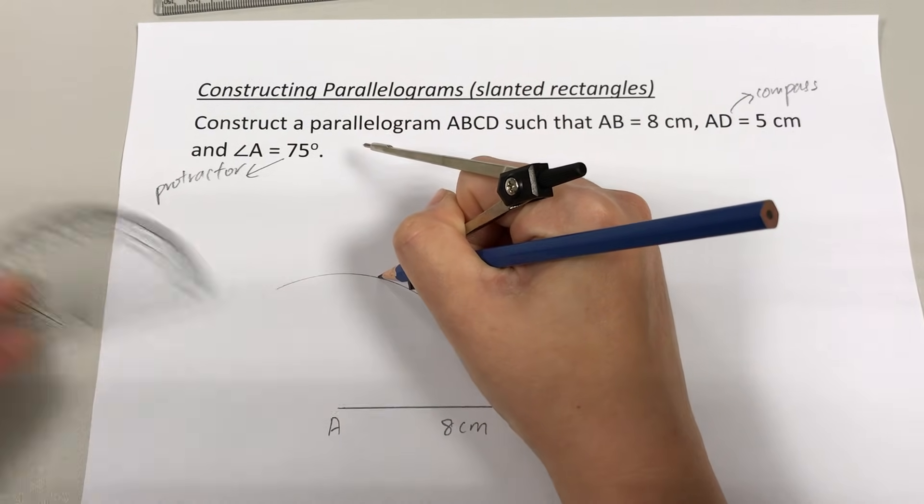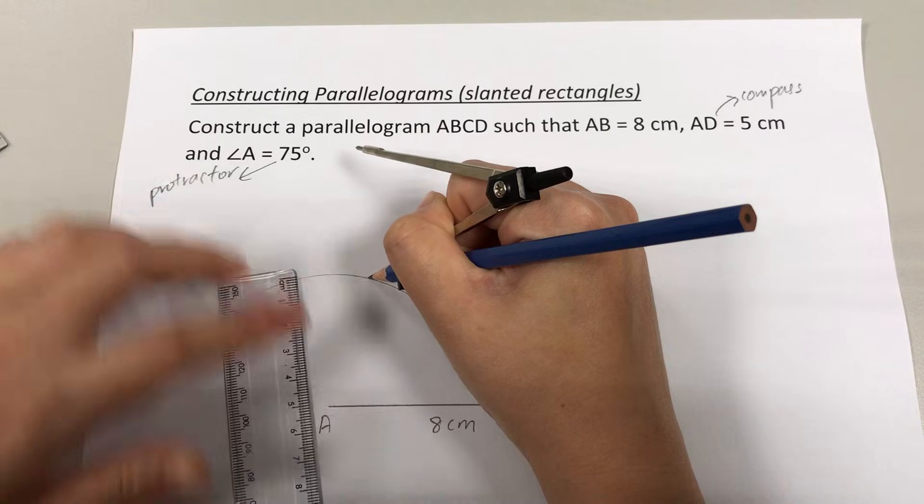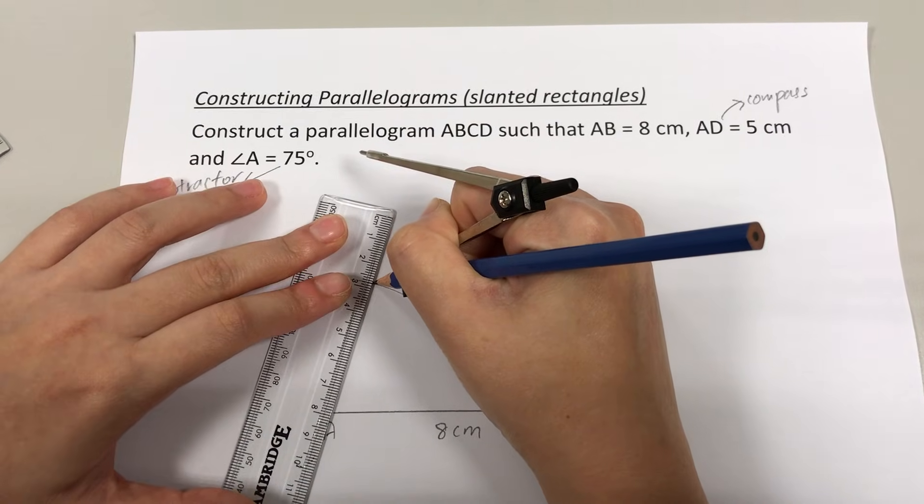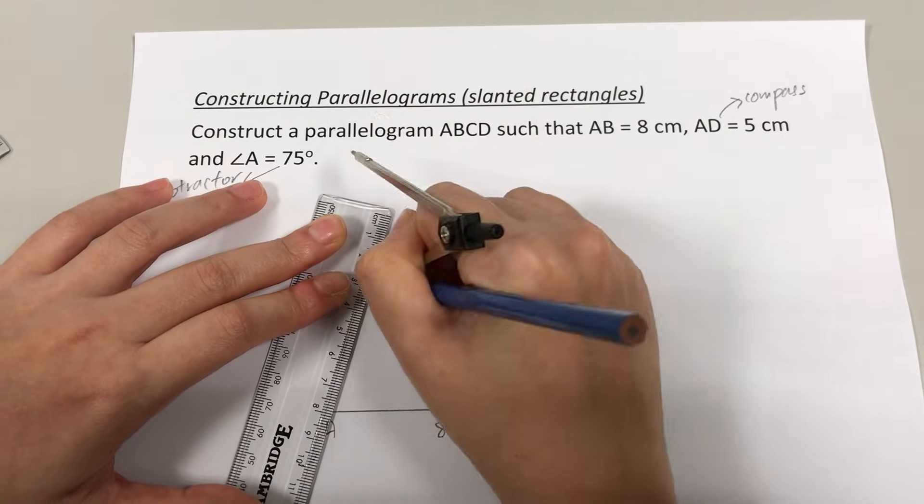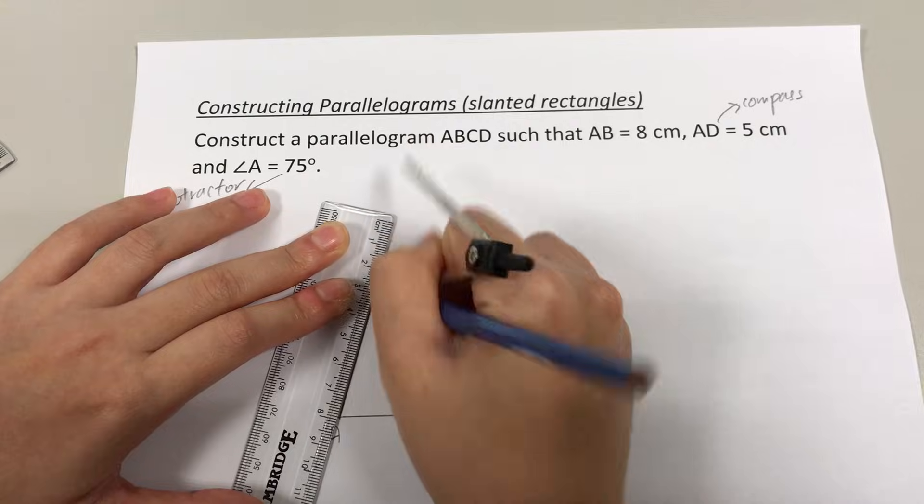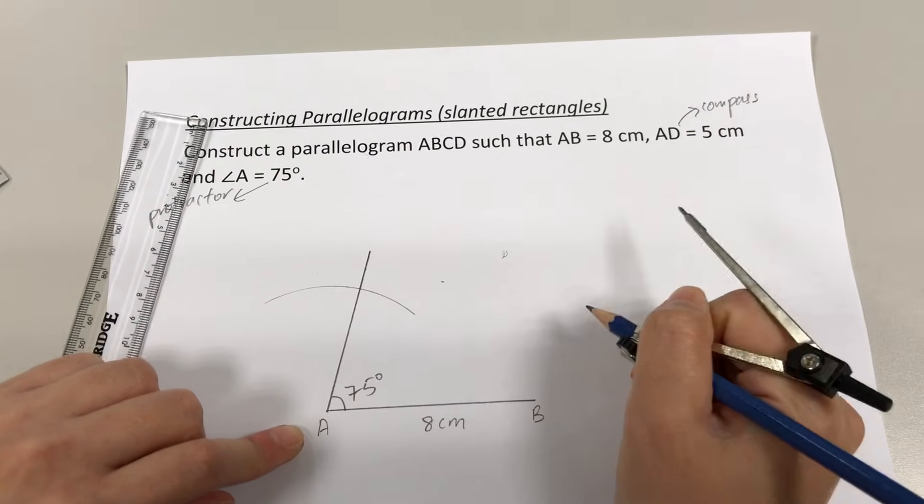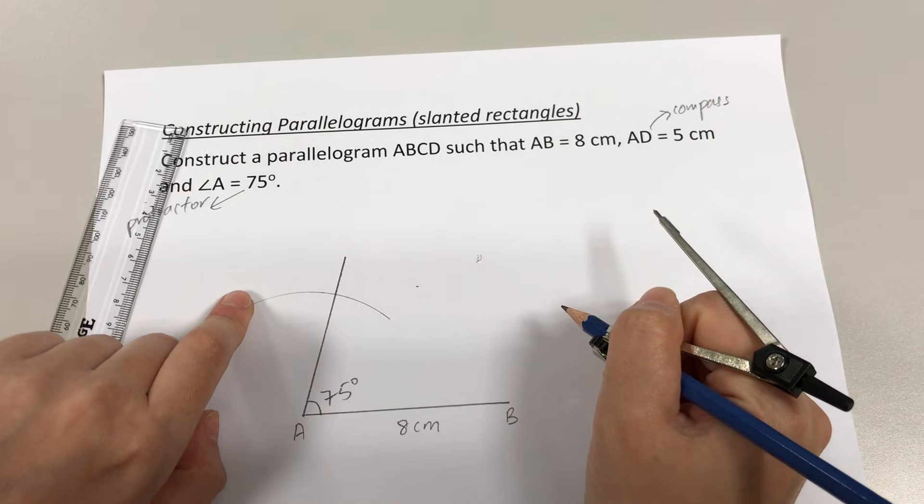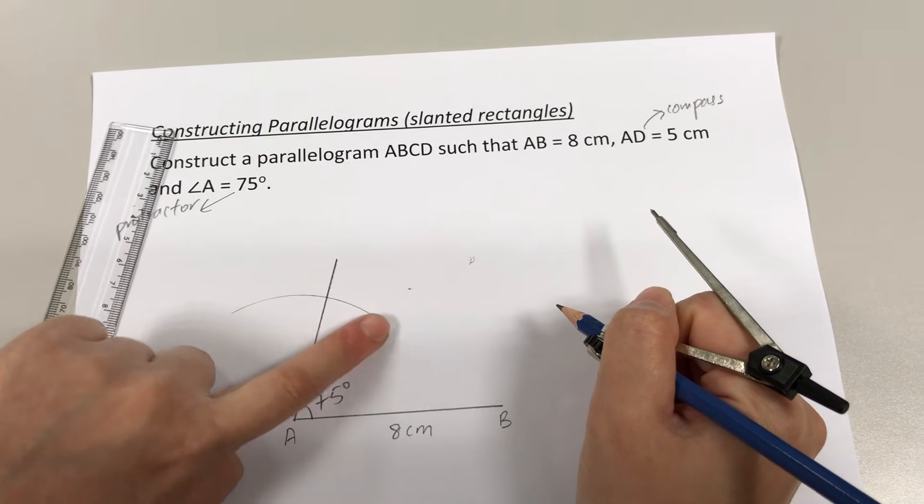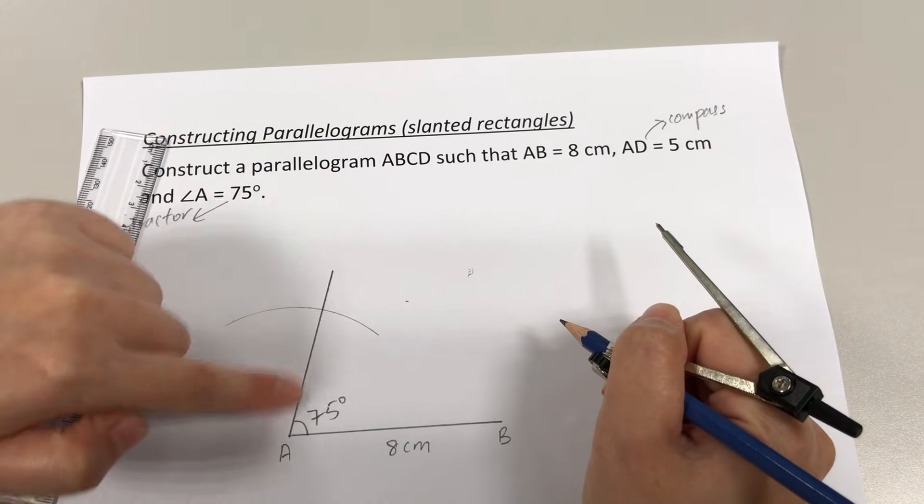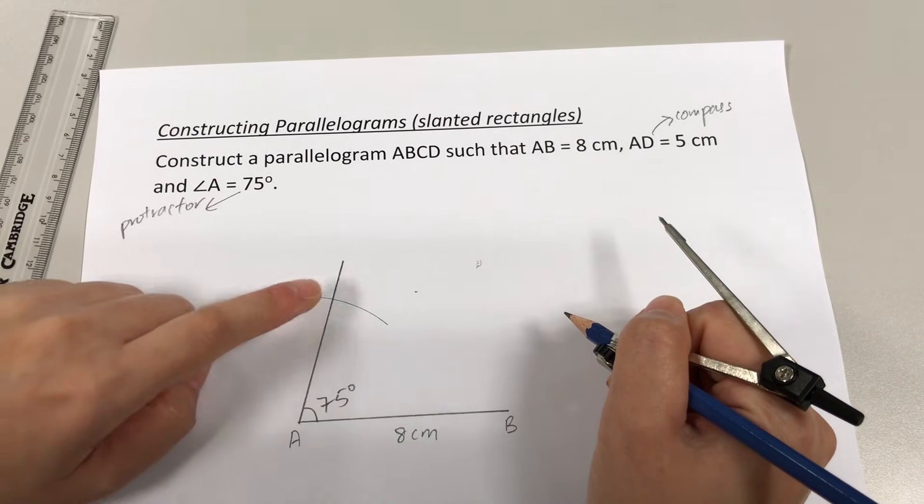So this is where 75 degrees is at and I'm going to use my ruler to join it back to point A. So I've drawn angle A 75 degrees and as you can see here, I now have a meeting point between this curve and this angle line that I have just drawn.